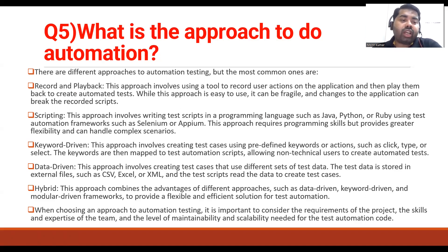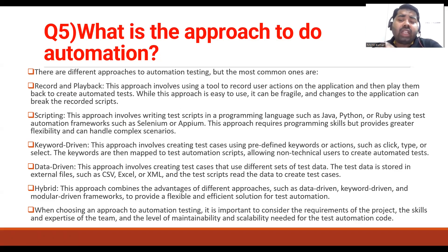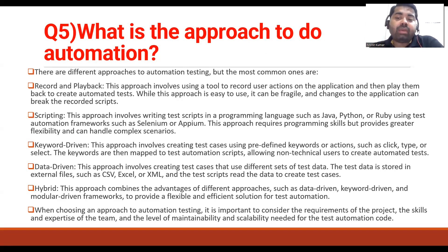There are different approaches to automation testing. The most common ones are: first, record and playback — this approach uses tools to record user actions on the application and plays them back to create automated tests. While it is easy to use, it can be fragile and changes to the application can break the recorded script.